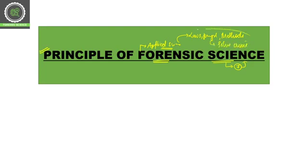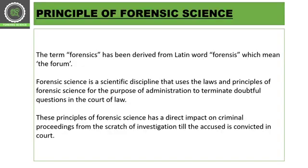All these methods and laws are related with forensic science because we are applying them to solve crime. But these seven principles of forensic science are specifically and only related with forensic science. So let's understand these important principles of forensic science.